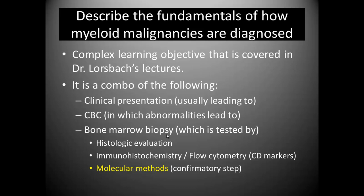Then we do special tests. We can do immunohistochemistry to look for those CD markers, or we can do flow cytometry to look for the CD markers. And then we also do molecular testing. In these diseases that's actually the confirmatory step, but it takes all of the previous steps to get to that. The molecular methods we use to look for specific translocations are one of the most important things that we do.